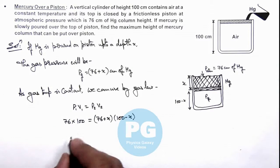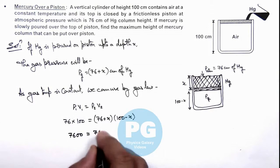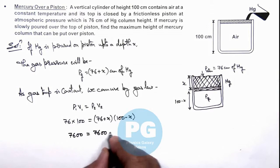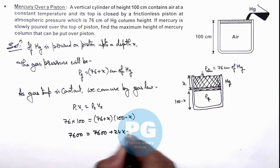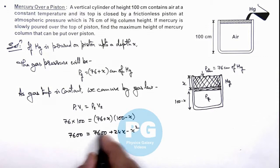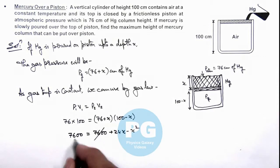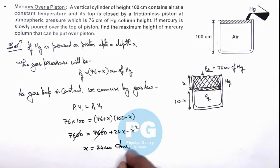We simplify this: 7600 is equal to 7600 plus 24x minus x squared. Here 7600 gets cancelled out, and on simplifying we are getting the value of x is 24 centimeters. That is the result of this problem.